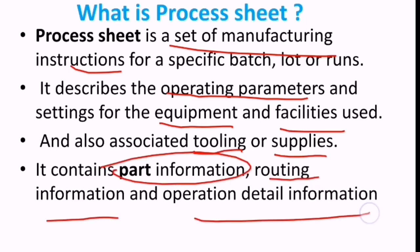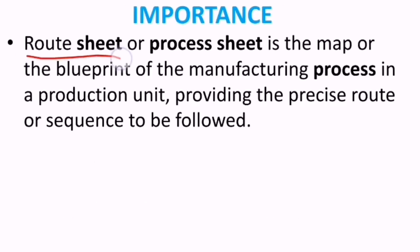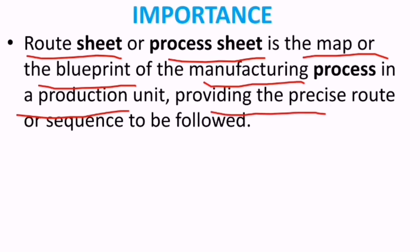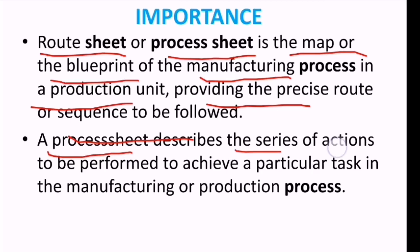A route sheet or process sheet is the map or blueprint of the manufacturing process in a production unit, providing the precise route or sequence to be followed. It describes the series of actions to be performed to achieve a particular task in the manufacturing or production process.